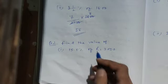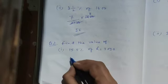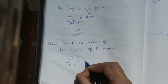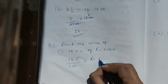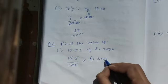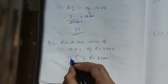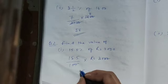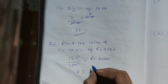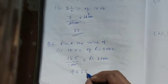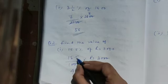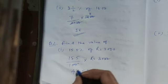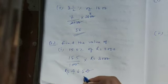Question number 2: find the value of 15.5 percent of rupees 3000. 15.5 percent means divide by 100, 'of' means multiply by 3000. Cancel two zeros: 30 into 15.5. Multiply: 30 times 15 is 450, plus 30 times 0.5 is 15, giving 465. Applying decimal placement — one decimal digit — the answer is rupees 465.